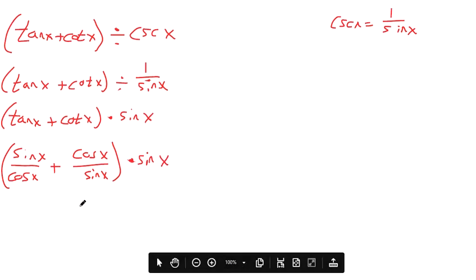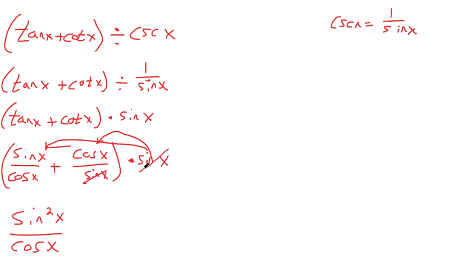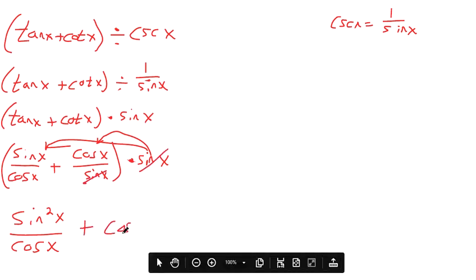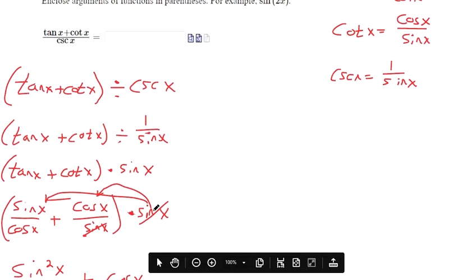And now, to make this multiplication happen, we use the distributive property. So that's going to give us sine squared up top. Because you could put a little one under it. And then you multiply across the numerators. Sine times sine. But when we multiply here, the two sines cross-cancel. So we get just cosine x.